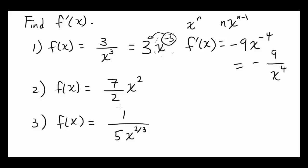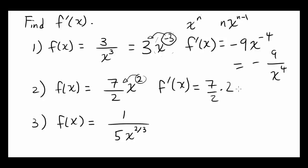The second one: 7 halves times x squared. Well, f prime of x is going to be — bring this 2 down — so you're going to have 7 halves times 2, times x to the 2 minus 1 power, or just the first power, just x. And these 2s cancel out, so you get 7x.